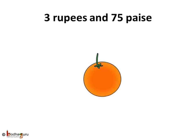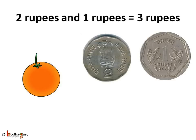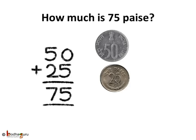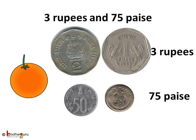How will you pay 3 rupees and 75 paise for an orange? First, let's pay 3 rupees. So we take a 2 rupee coin and a 1 rupee coin — 2 plus 1 is equal to 3. Now we have a 2 rupee coin plus 1 rupee coin that is equal to 3 rupees. Now we have to pay 75 paise extra. So we will take a 50 paise and a 25 paise coin. We know 50 plus 25 is equal to 75. So 50 paise plus 25 paise will be equal to 75 paise. To buy that orange of 3 rupees and 75 paise, we take a 2 rupee coin and a 1 rupee coin that adds to 3 rupees, and a 50 paise coin and a 25 paise coin that adds to 75 paise. So the total is 3 rupees and 75 paise.